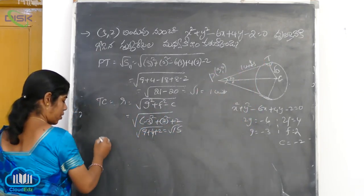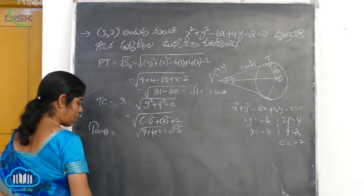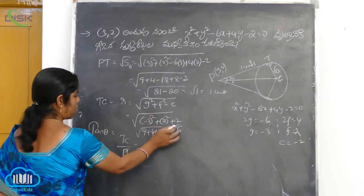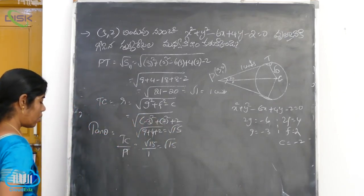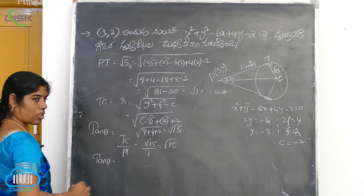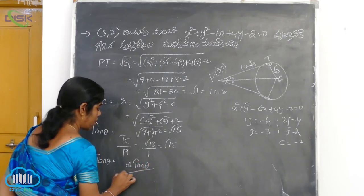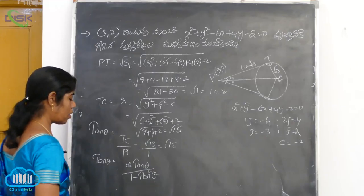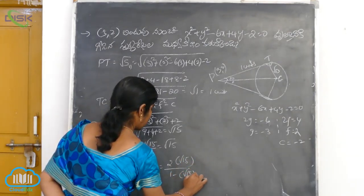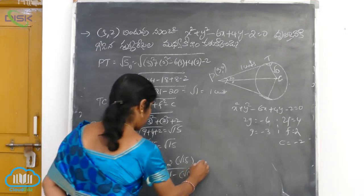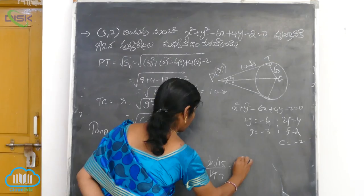So tan theta — using the formula: tan 2theta is equal to 2 tan theta by 1 minus tan square theta. So 2 into tan theta — we know root 15. 1 minus tan square theta, where tan square theta equals root 15 squared. So 2 root 15 by 1 minus 15, which is minus 14 — cancelling gives root 15 by minus 7.